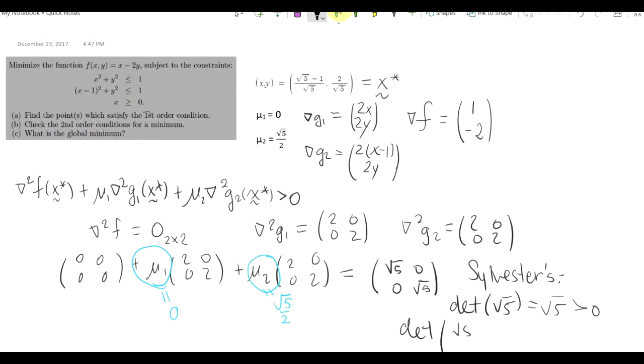And then we have the second co-minor, which is, in this case, just the matrix itself. And the determinant of that is 5, also positive.